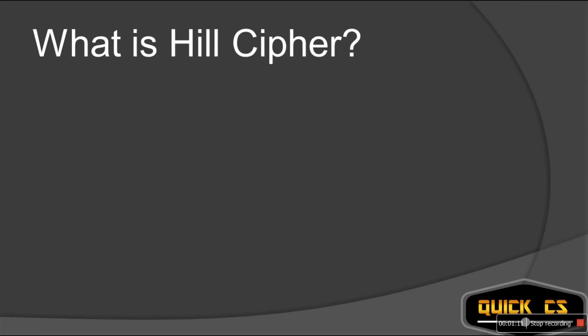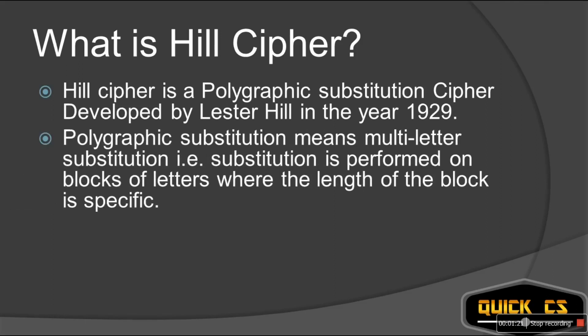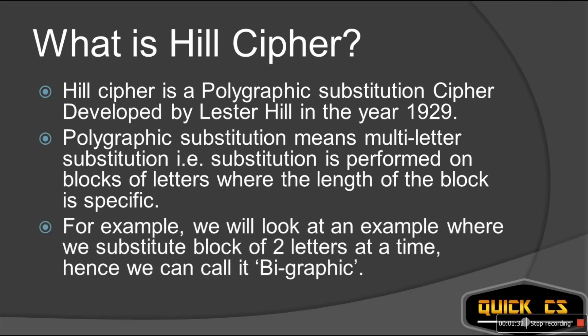What is Hill Cipher? Hill Cipher is a polygraphic substitution cipher developed by Lester Hill in year 1929. But what is polygraphic substitution? Polygraphic substitution means multiletter substitution — that is, substitution is performed on blocks of letters where the length of the block is specific. For example, we are going to do encryption on a block of two letters, so we can call it bigraphic — bi as in two, and graphic.